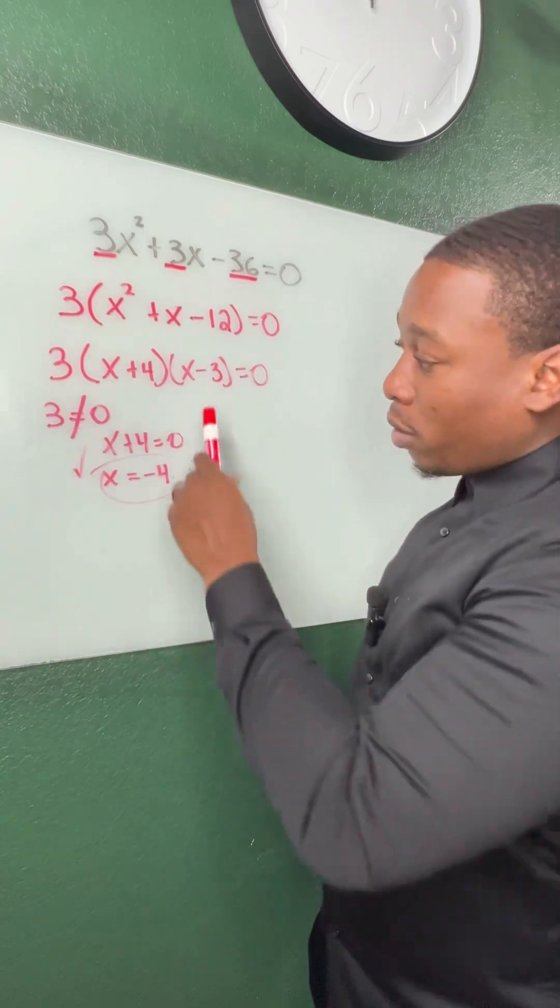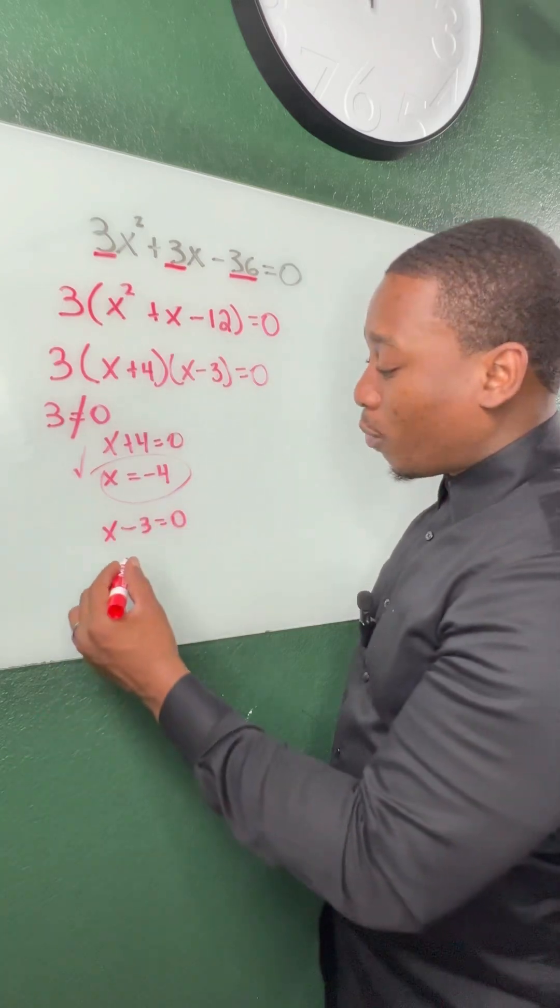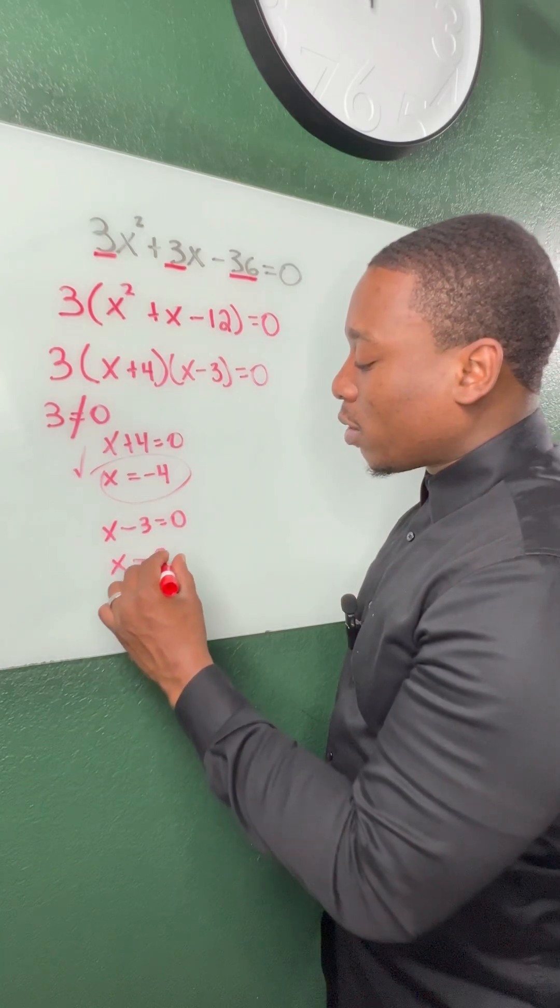That's our first answer. Second factor, x minus 3 is equal to 0. Add 3 on both sides, so we know x is equal to 3.